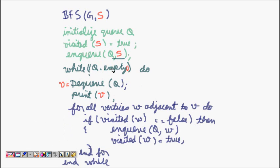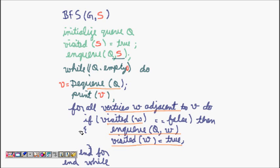While the queue is not empty, I dequeue an element v and print it. Then for all vertices w adjacent to v, if visited[w] is false, I enqueue w into the queue and set visited[w] to true. This ensures first-come-first-served processing.